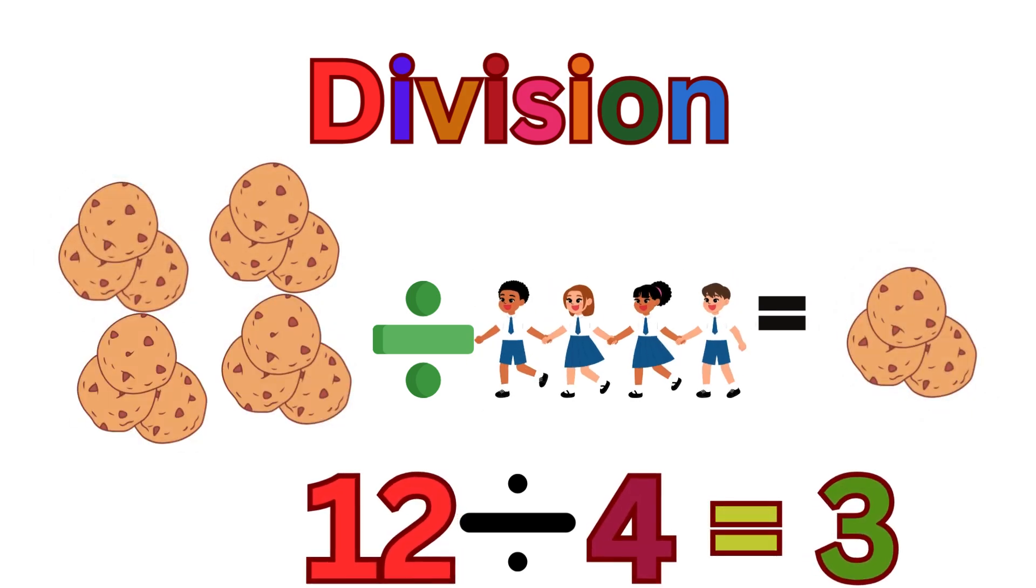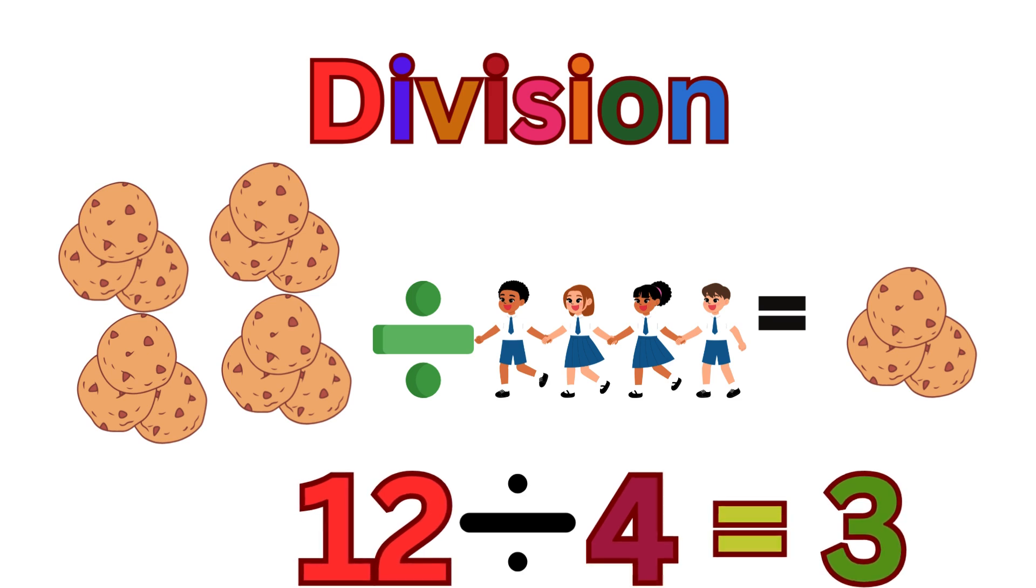If you have 12 cookies and four friends, each friend gets three cookies. 12 divide 4 equals 3.